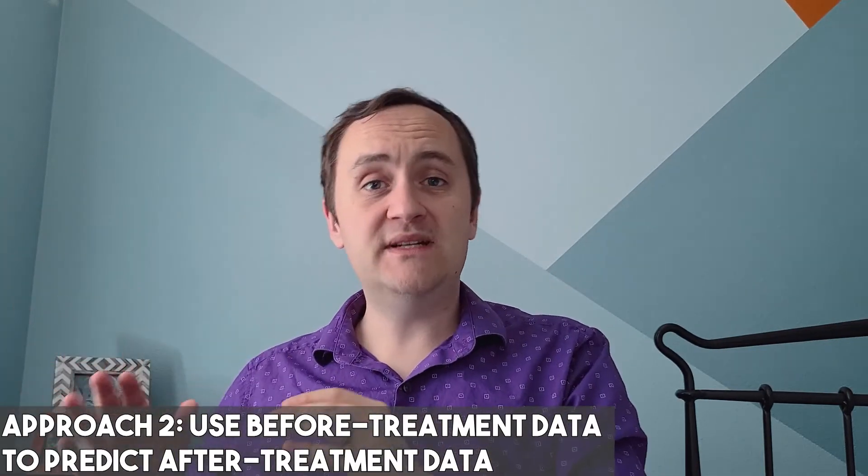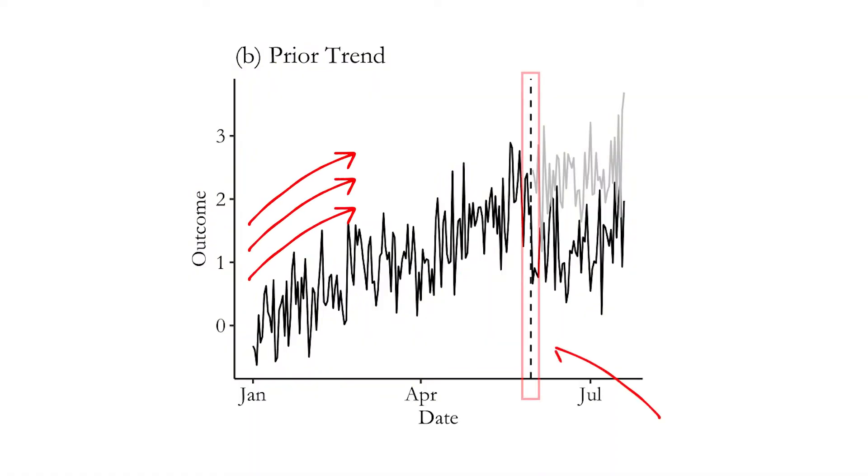The second approach is to predict the after-treatment data using the before-treatment data with something like a time trend — exactly what you saw on the graphs. We saw either a flat or an upward-sloping trend and assumed it would continue. If we see an upward-sloping trend, we assume things would have continued in that direction, and whatever we actually see relative to that trend is our positive or negative treatment effect. The ways of predicting this trend can include linear regression or advanced time series modeling. In some way, you're predicting the continuation of a trend seen in the pre-treatment data and comparing the actual value to whether it's above or below what the prior trend would have predicted.